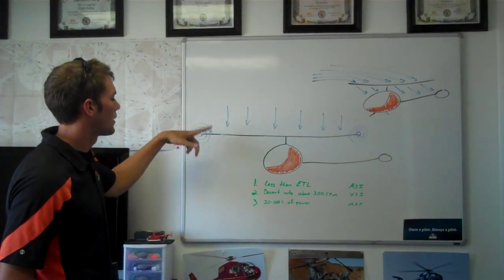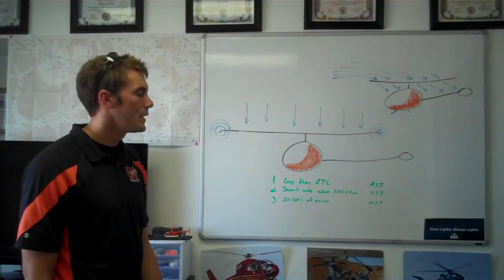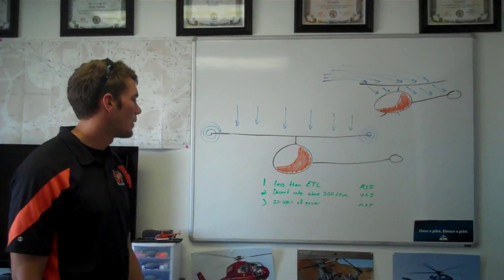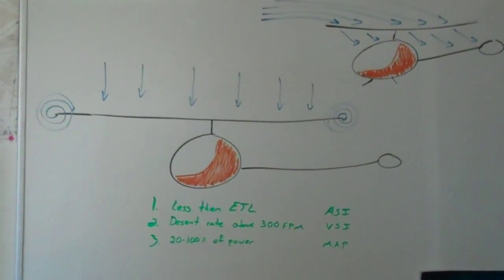So then we're trying to settle into that air creating vortex, vortices around the tips of the blades, and then we're using more than 20 to 100% of power. Basically, we're not able to power out of it or anything.